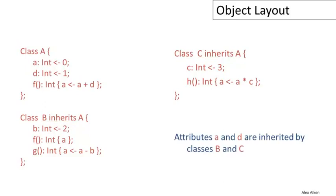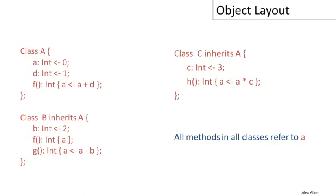An important feature here is that because B inherits from A and C inherits from A, both of those classes inherit the attributes A and D from class A. So these two attributes defined in class A are available in class B and in class C. Even though there's no mention of A and D in the definition of class B, the methods in class B can still refer to those attributes — they are inherited from A. Another feature to point out is that all of the methods refer to attribute A, including this method, this one, twice in this method, and also in this method.